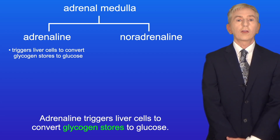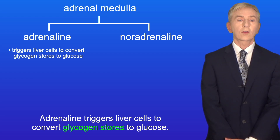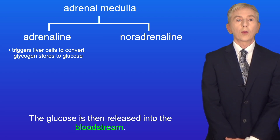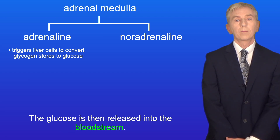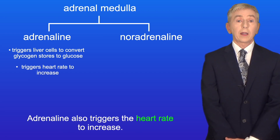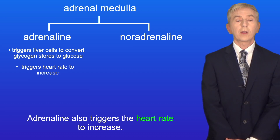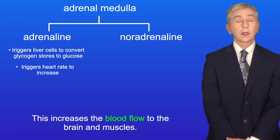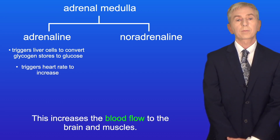Adrenaline triggers liver cells to convert glycogen stores to glucose, and the glucose is then released into the bloodstream. Adrenaline also triggers the heart rate to increase, and this increases the blood flow to the brain and muscles.